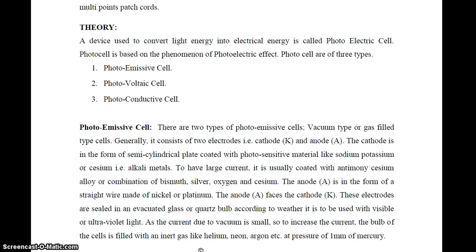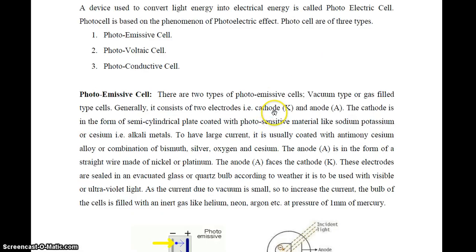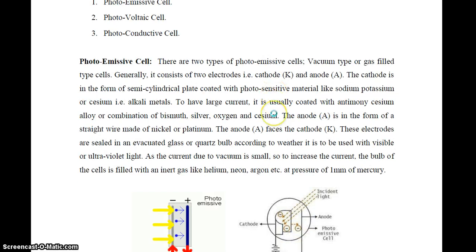Since the current due to vacuum operation is small, to increase the current the bulb of the cell is filled with inert gases like helium, neon, or argon at a pressure of 1 mm of mercury. This is the concept of the photoemissive cell.